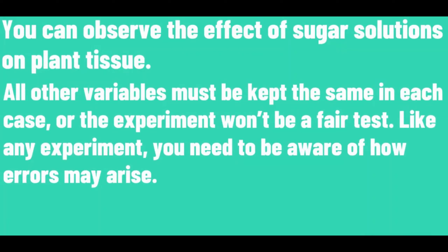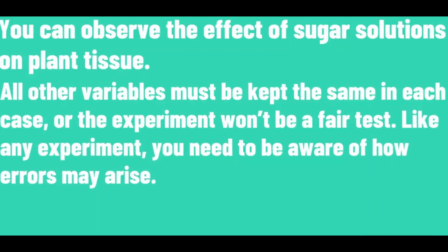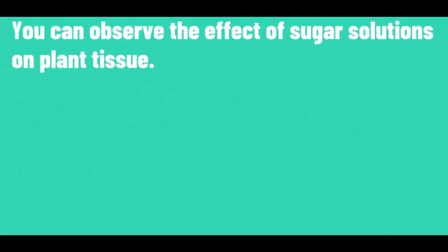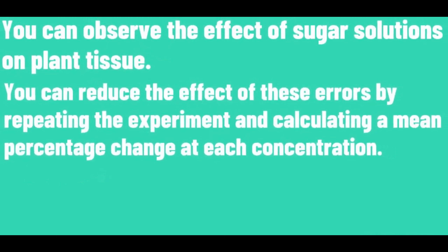Like any experiment, you need to be aware of how errors may arise. Sometimes errors may occur when carrying out the method. For example, if some potato cylinders were not fully dried, the excess water would give a higher mass. You can reduce the effect of these errors by repeating the experiment and calculating a mean percentage change at each concentration.